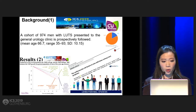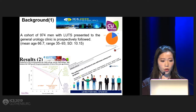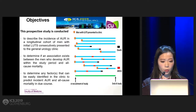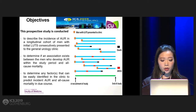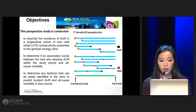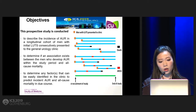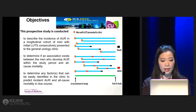Based on that, we had a cohort of 974 men with lower urinary tract symptoms presenting to the urology clinic, and they are prospectively followed. The aim of our study is to describe the incidence of acute urinary retention in a longitudinal cohort, determine if there is an association between men who developed acute urinary retention and all-cause mortality, and identify factors easily identified in the clinic to predict incident acute urinary retention and all-cause mortality.